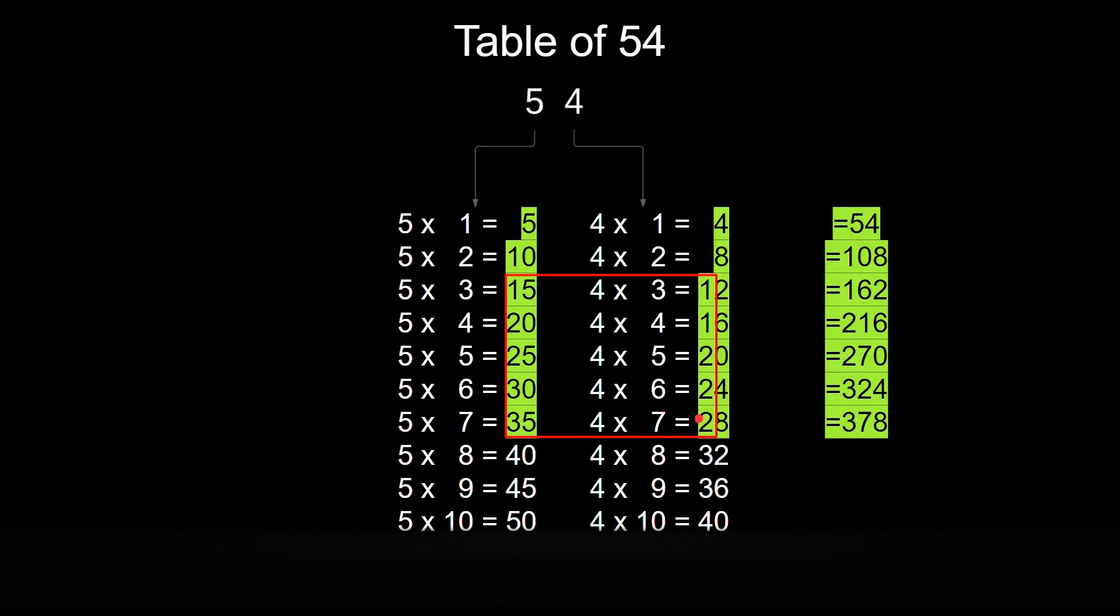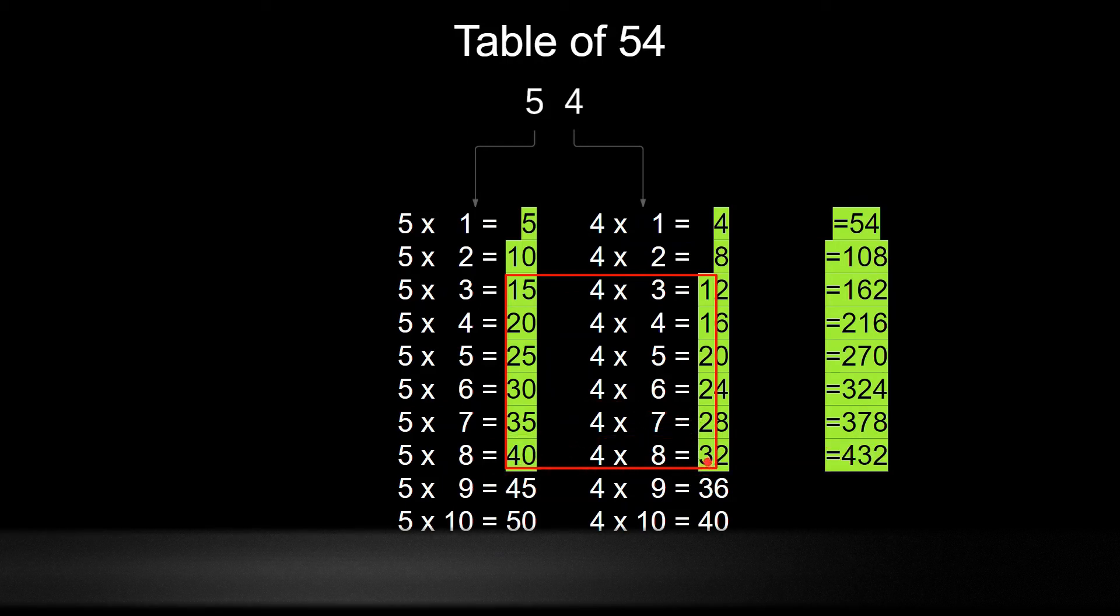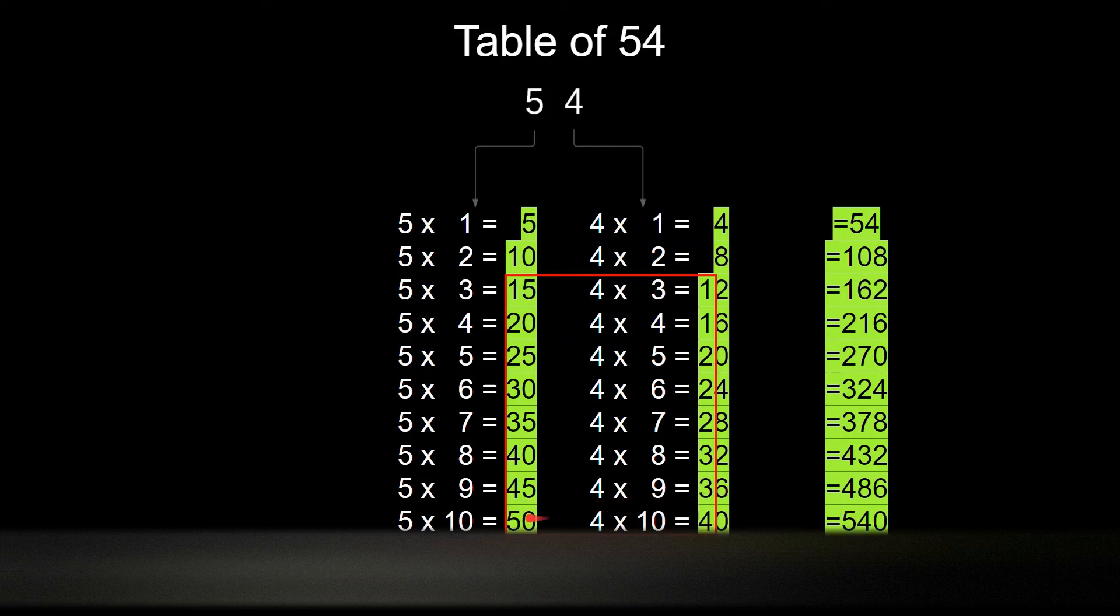Then 35 plus 2 is 37 and 8, which is 378. Then 40 plus 3 is 43 and 2, which is 432. Then 45 plus 3 is 48 and 6, which is 486. And then 50 plus 4 is 54 and 0, which is 540.